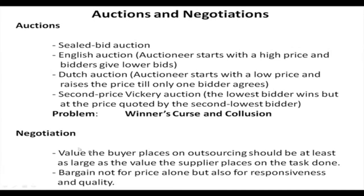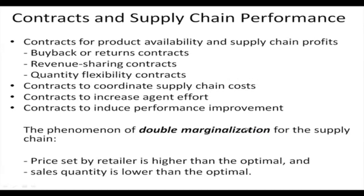In supply chain there can be different types of contracts between the buyer and the seller. We are mentioning six such contracts. The first category is contracts for product availability and supply chain profits, which has three types: buy back or returns contracts, revenue sharing contracts, and quantity flexibility contracts. All three fall under contracts for product availability and supply chain profits.